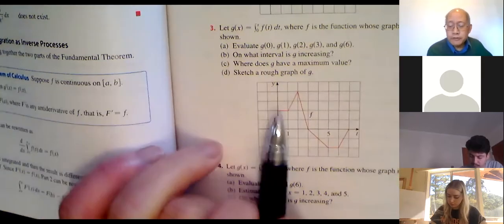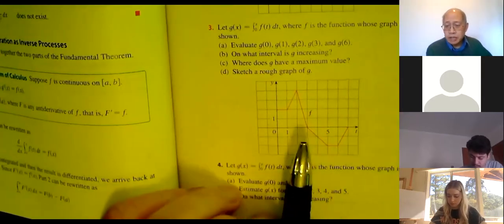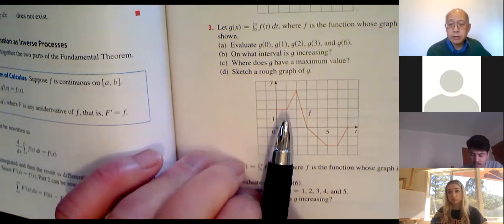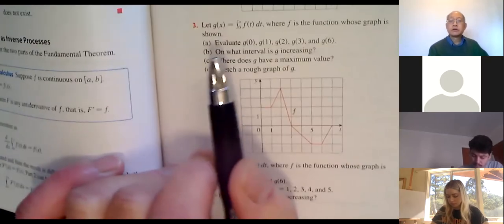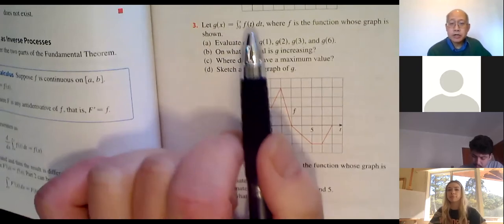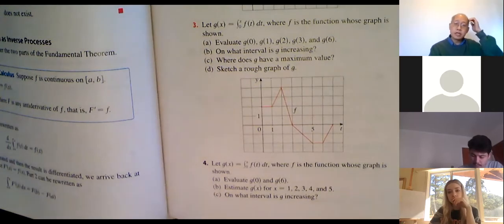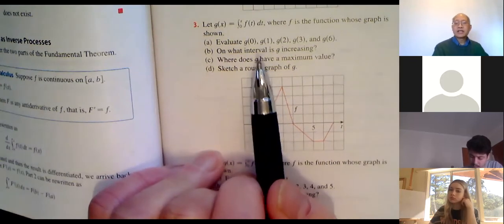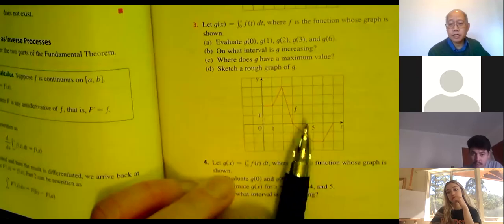Number three: there are no curves, everything is a straight line, so we should be able to get the exact answer because it's just rectangles, squares, and triangles. g of x is defined as the integral from zero to x — notice constant on the bottom, variable on the top — of f of t dt, where f is the function whose graph is given. Evaluate g at 0, 1, 2, 3, 4, 5, 6.